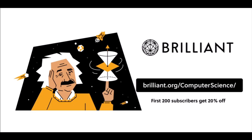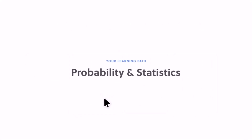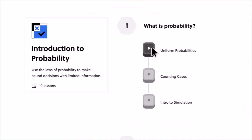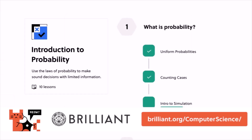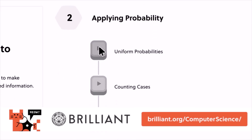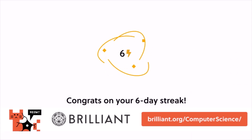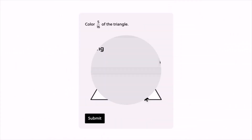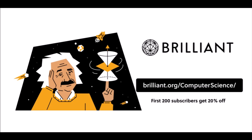This video is sponsored by Brilliant.org. Looking to boost your knowledge and sharpen your skills? With their interactive hands-on approach to learning, Brilliant offers courses in math, data science, computer science, and more, catering to all skill levels. Sign up for a free 30-day trial using the link brilliant.org/computerscience in the description below to gain access to all of the platform's tools, resources, and interactive lessons.